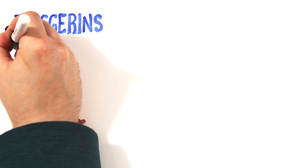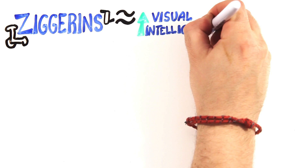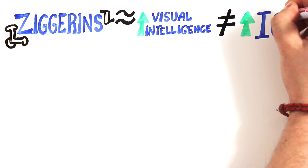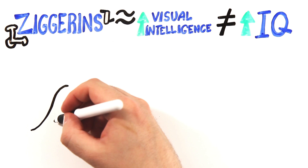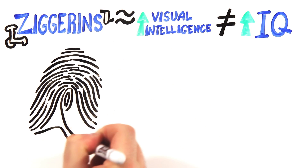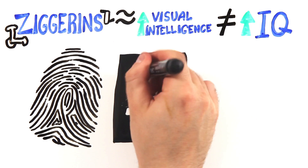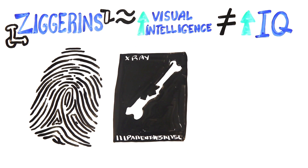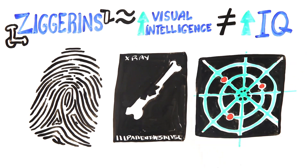If you're good at the zigurin task, you may have higher visual intelligence, which is not the same as IQ. But it could mean that you'll excel at tasks like matching fingerprints, interpreting medical X-rays, or keeping track of aircraft on radar displays.